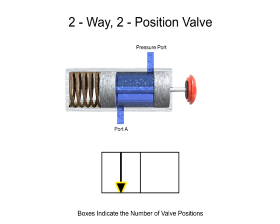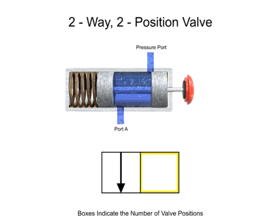A solid arrow indicates the direction of liquid flow. The first position of this valve allows fluid to flow from the pressure port to port A, so an arrow is drawn in the first box to indicate fluid flow. A T indicates that a port or way is blocked or closed. This valve's first position has no ports blocked, but its second position blocks both.